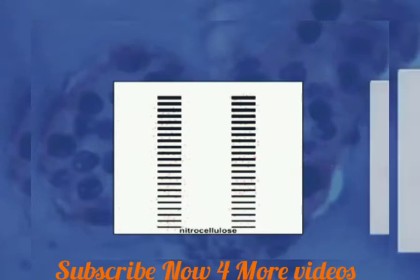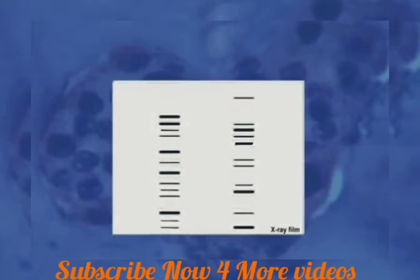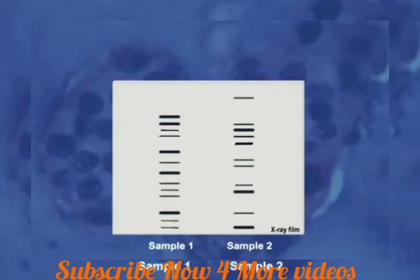The blot is then exposed to an X-ray film. Fragments of DNA that have bound the probe appear as dark bands on the film. As seen here, the samples designated 1 and 2 have a different pattern of bands, indicating that they came from two different individuals.